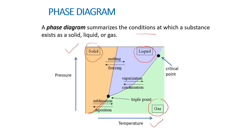The boundary separating solid and gas is called the sublimation point curve. The boundary separating solid and liquid is the melting point curve. The boundary separating liquid and gas is the vaporization point curve. At a certain temperature and pressure, we have the triple point.